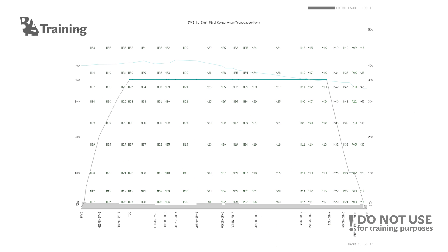The last page is the wind component planned for the en route flight. Because the route may not be straight and turns through various points, the wind components are calculated and listed for each enroute waypoint.